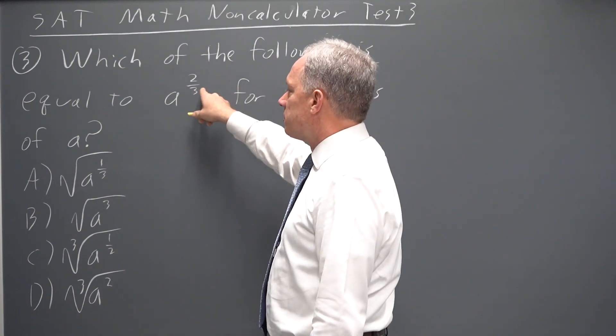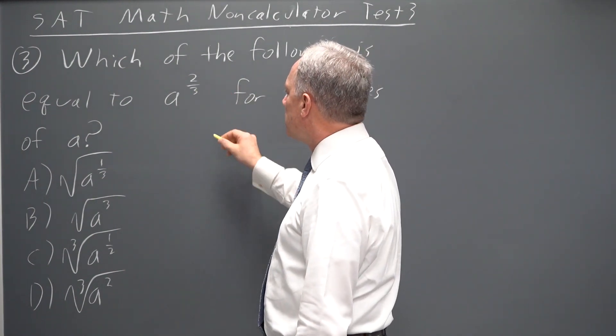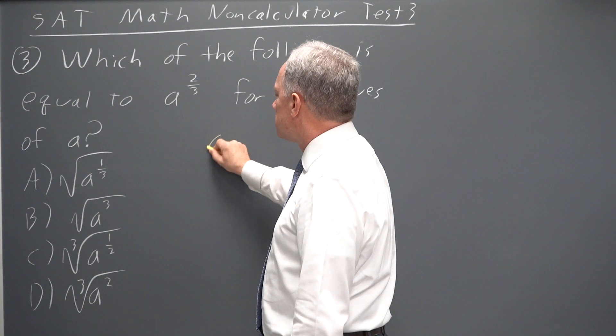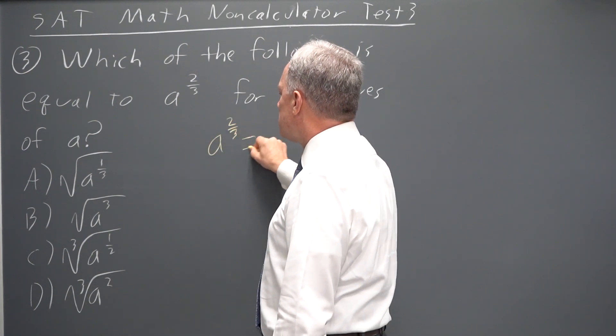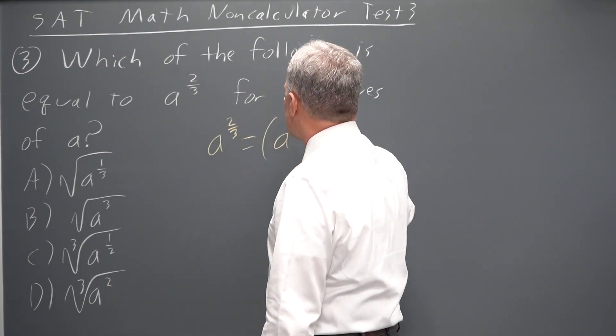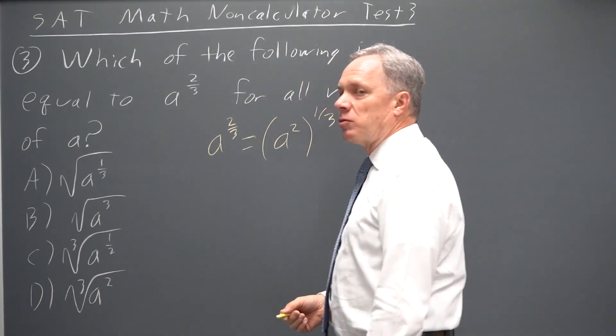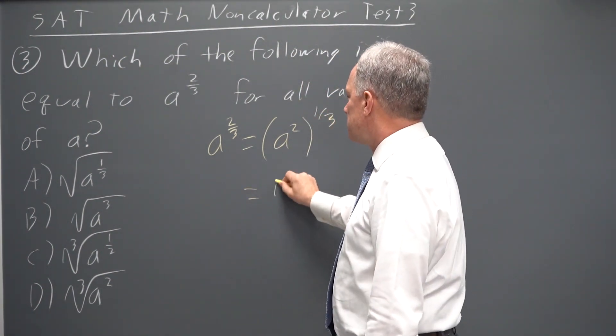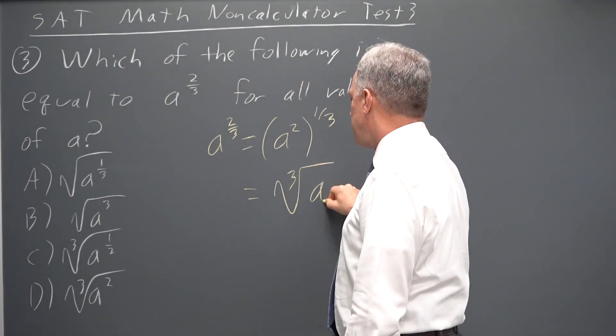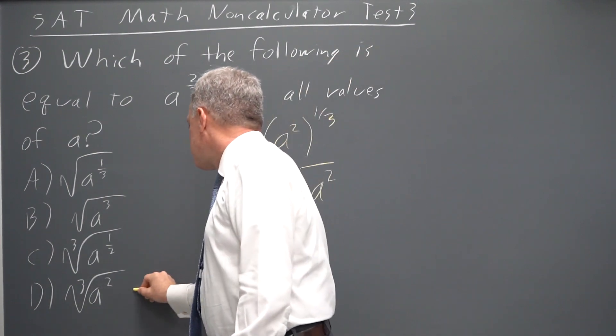So they're asking about how the numerator and the denominator work. a to the two-thirds is a squared to the one-third, and a one-third exponent is a cube root. So that's cube root of a squared, which is our last choice.